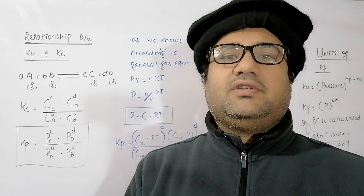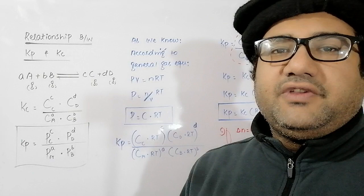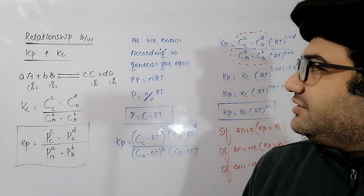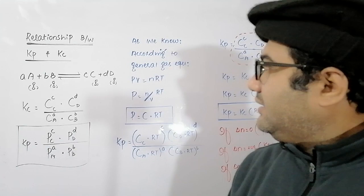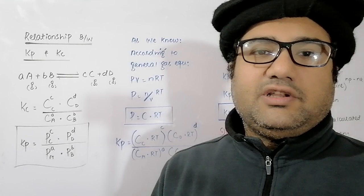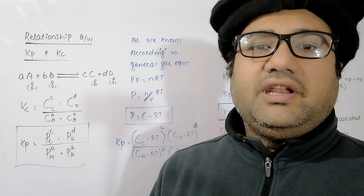Welcome everyone. Now let us start the topic: what is the relationship between Kp and Kc? Suppose there is a reaction in which 'a' moles of gas A react with 'b' moles of gas B to form 'c' moles of gas C and 'd' moles of gas D in a reversible manner. This is a gas-phase reaction in which all the reactants and products are present in their gaseous form.